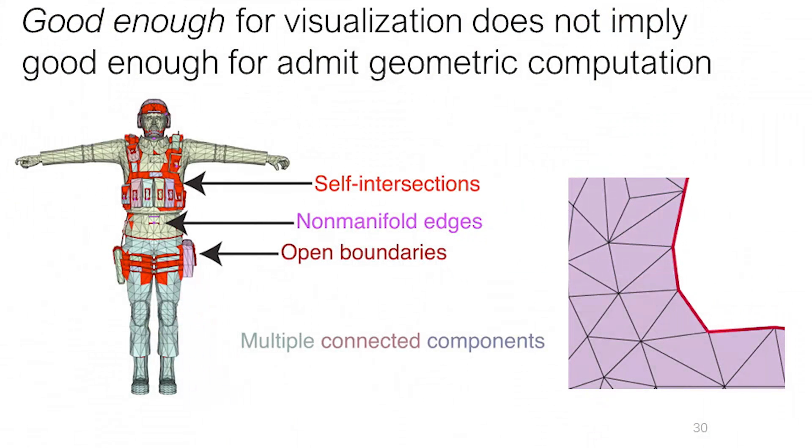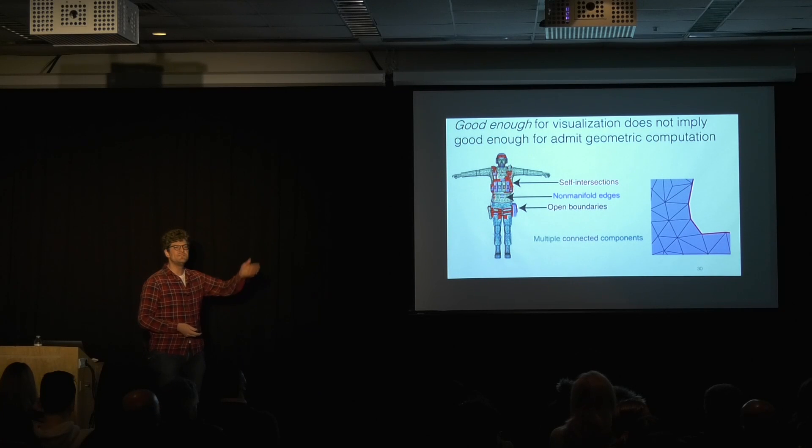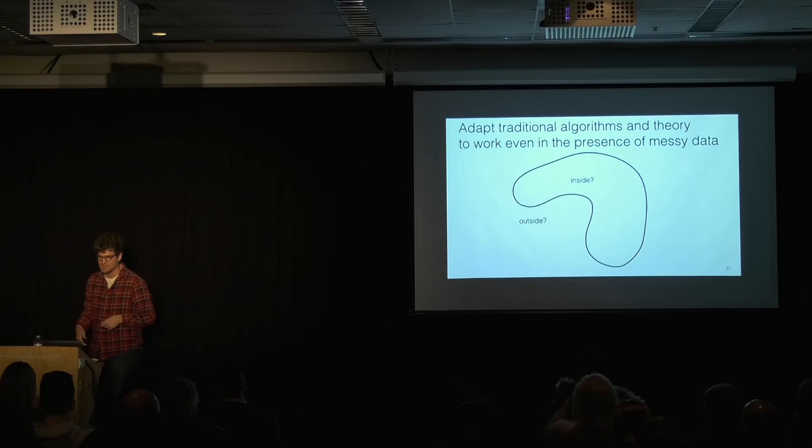Then we might have open boundaries. Maybe the artist who is making this model for a computer game just sort of got fed up making that pocket and didn't decide to continue it. The surface just sort of ends. All of these problems don't really affect seeing what this shape is, but they're going to break our notion of what's inside and what's outside.